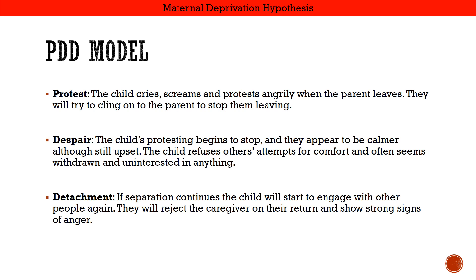To recap the PDD model: in the protest stage the child cries, screams, protests angrily when the parent leaves, and tries to cling on to stop them leaving or moves toward the door. In the despair stage, protesting begins to stop and the child appears calmer, but is still upset inside — they refuse others' attempts for comfort and seem withdrawn, using dummies, blankets, or toys for self-comfort. Finally, in detachment, if the separation continues the child starts to engage with other people again, but will reject the caregiver on their return and show anger towards them.